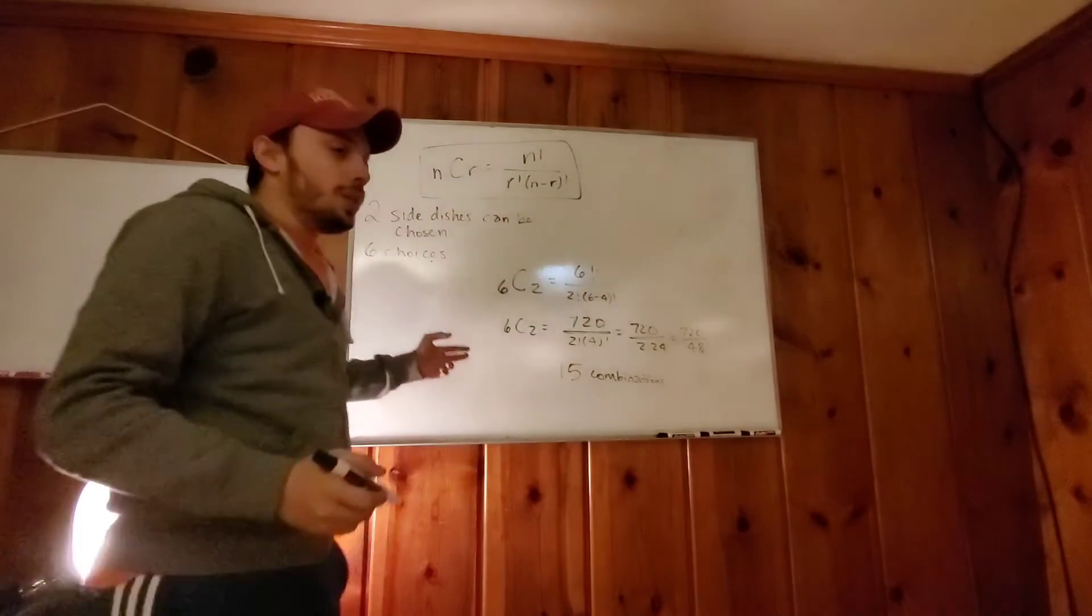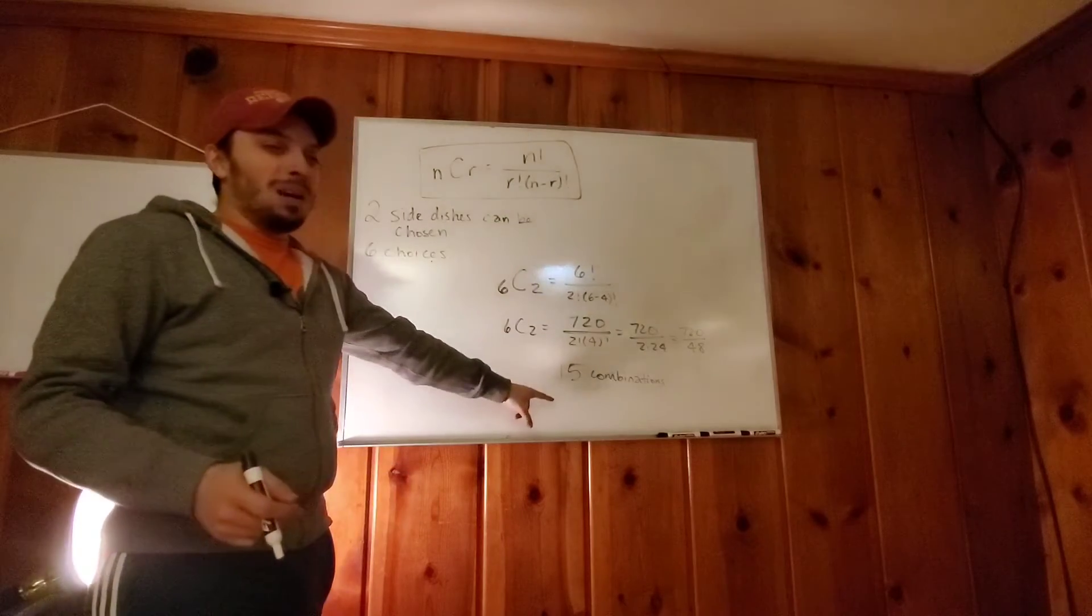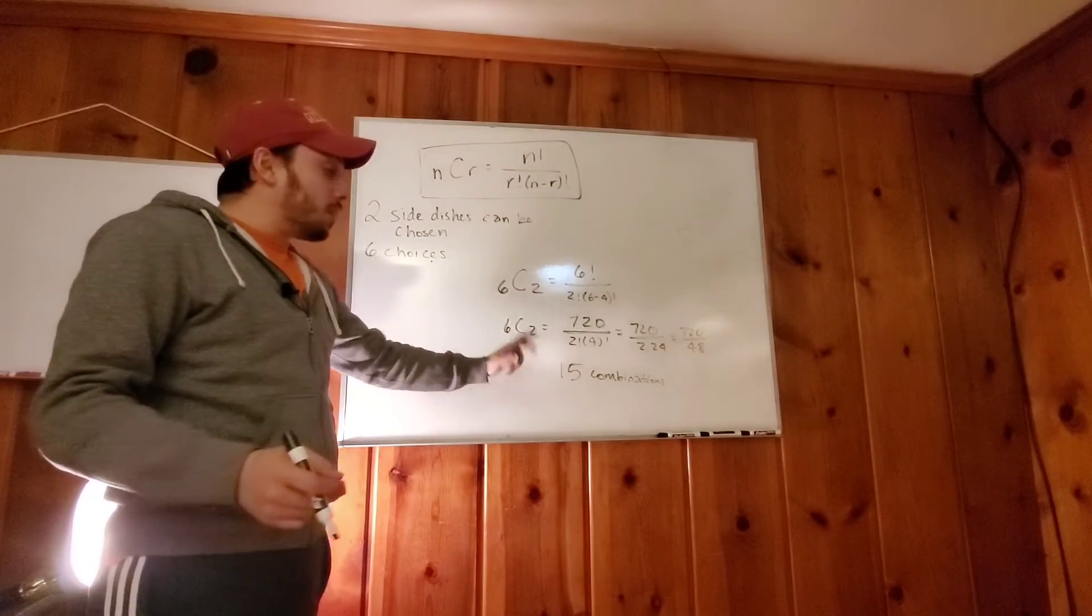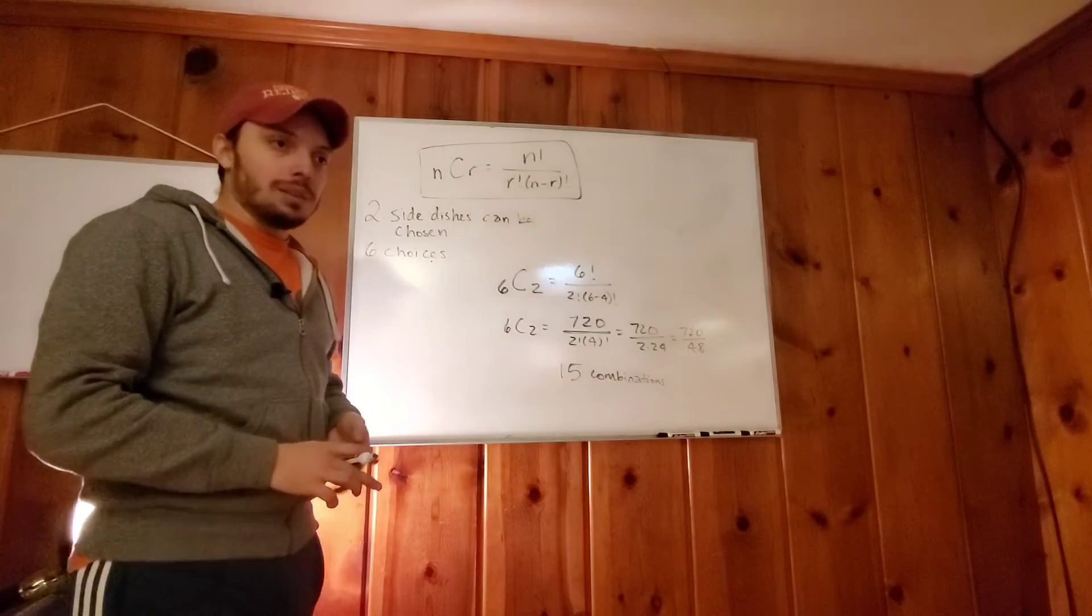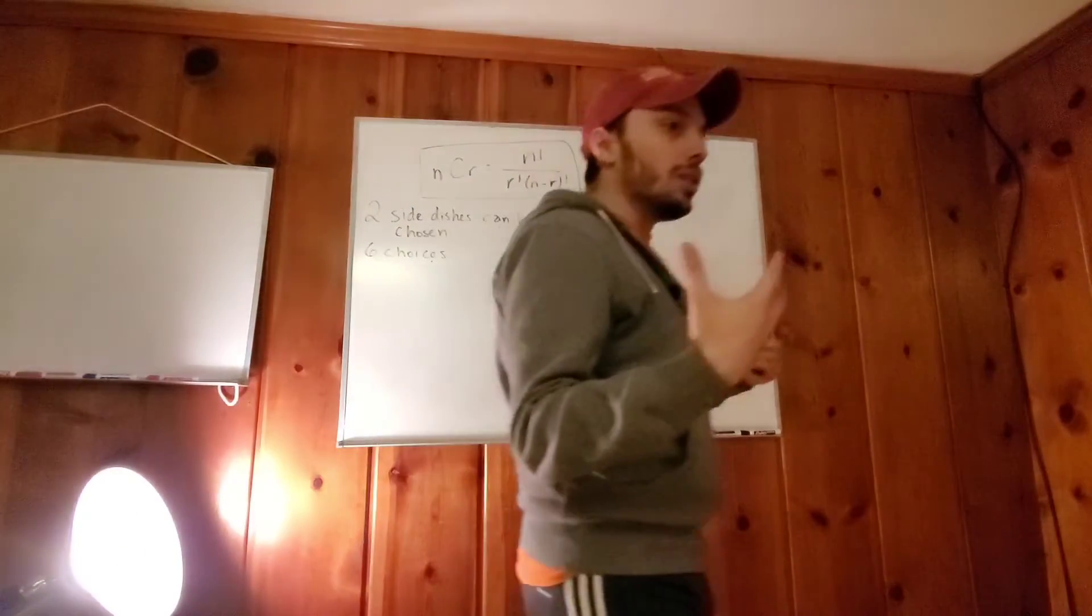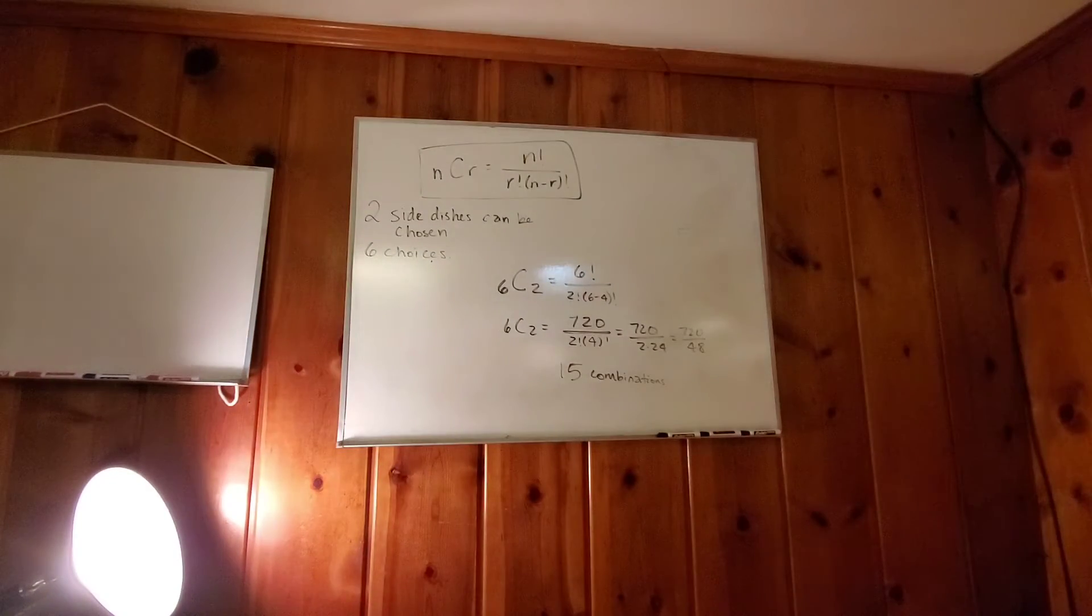Anyway, the combinations end up being 15 combinations. So for those of you who are interested, if you have six choices and you can only choose two, there's actually 15 possible combinations in which order doesn't matter, but there will be 15 different combinations because that's what the math tells us. And that's what combinations should not as easy as you guys think. So let's move on to the second part of this example.